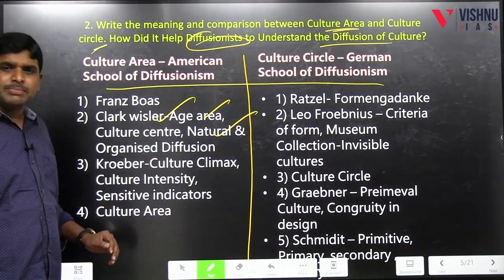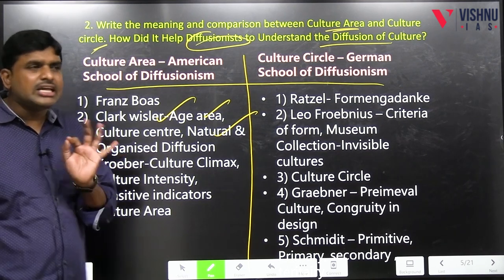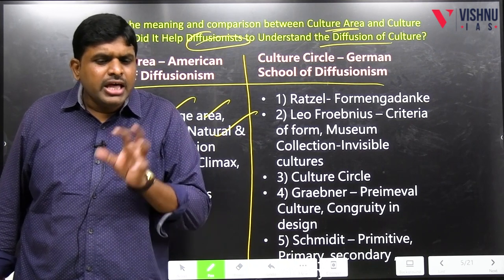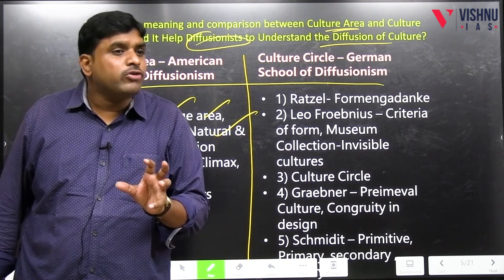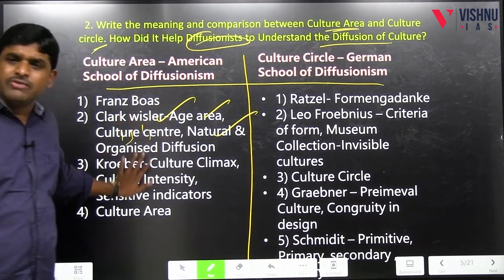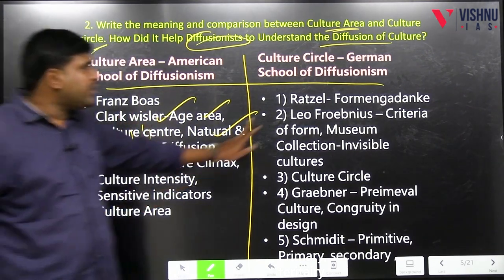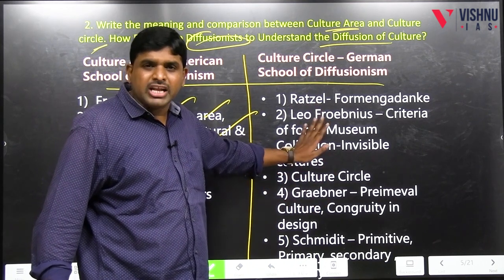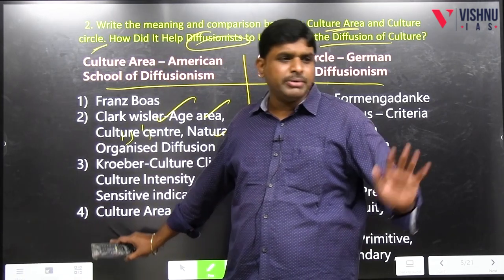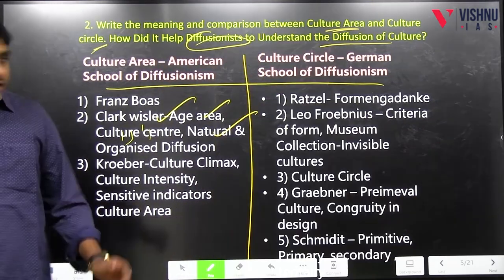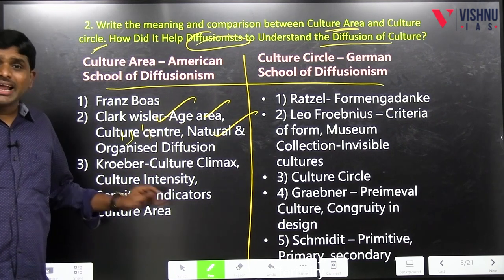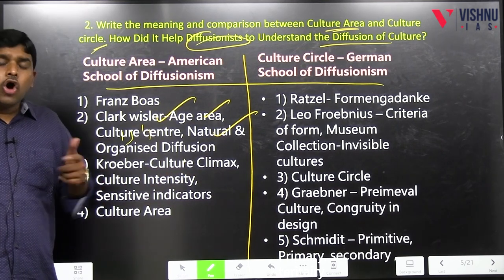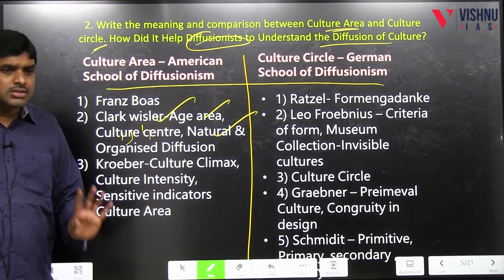Then Kroeber — a person who told very clearly what is culture area. In two different geographies, mainly because of geographical proximity, when cultural traits are getting diffused, it is called culture area. The reason for diffusion according to this school: geographical proximity and migration of people.